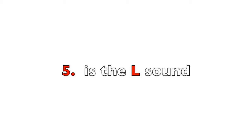Digit 5 is the L sound. If you hold up your hand, you can make an L with your fingers and thumb — with your 5 digits you can make an L like 'loser.' That allows you to remember that 5 is the L sound.